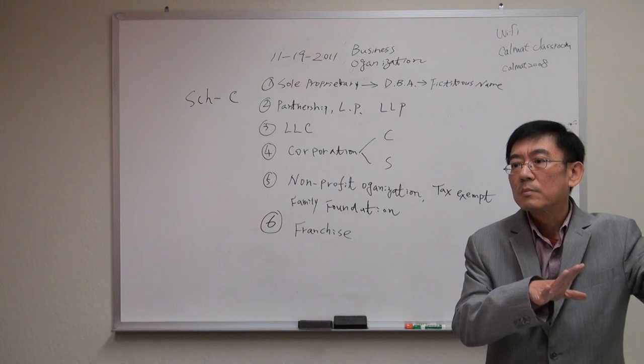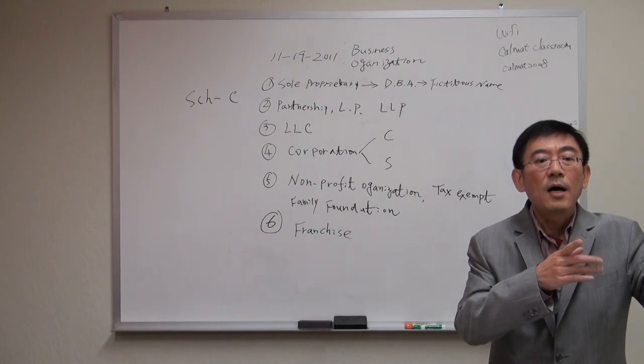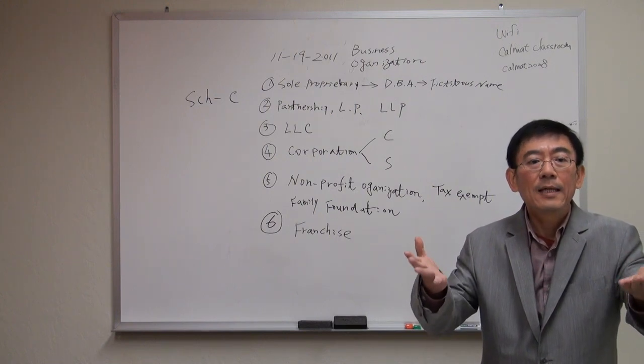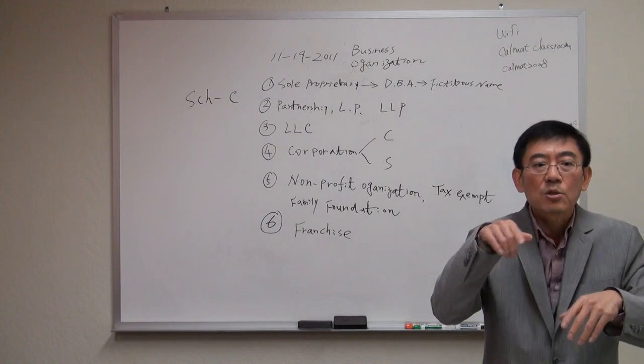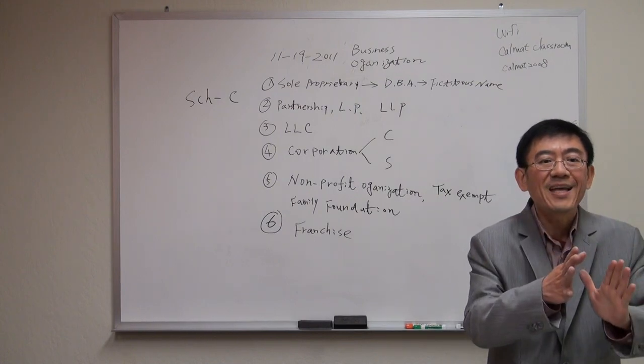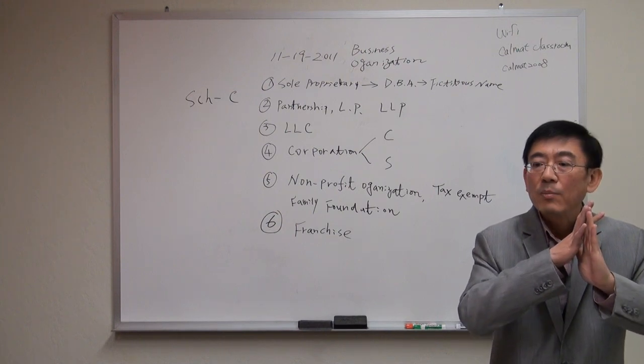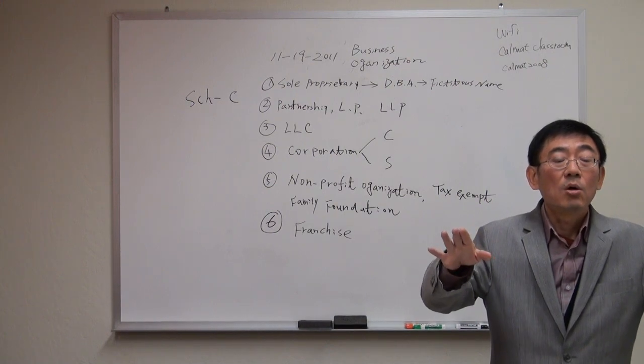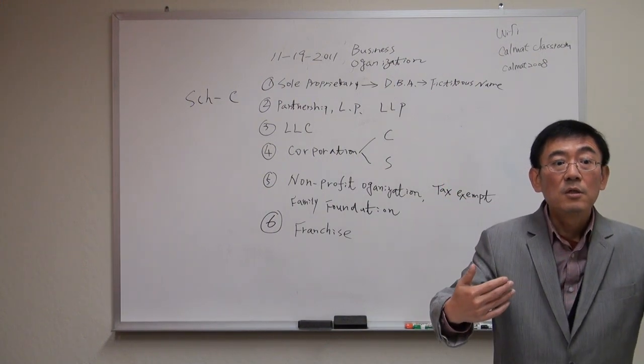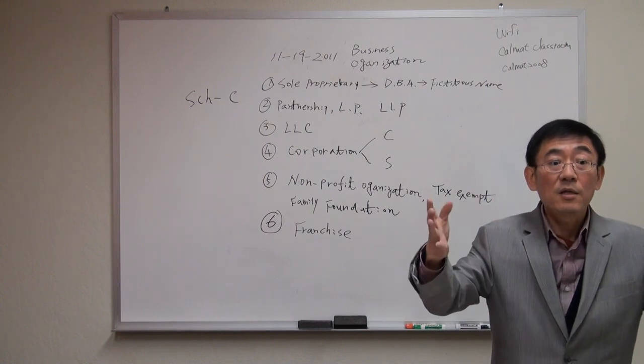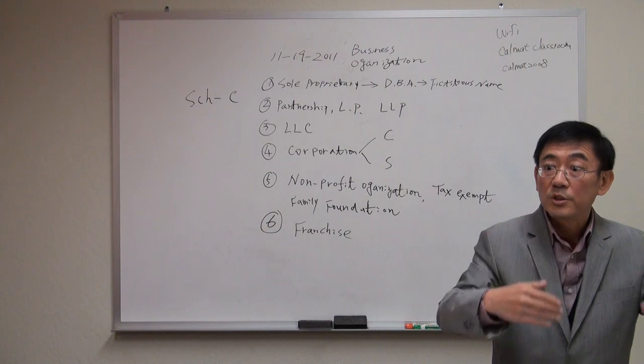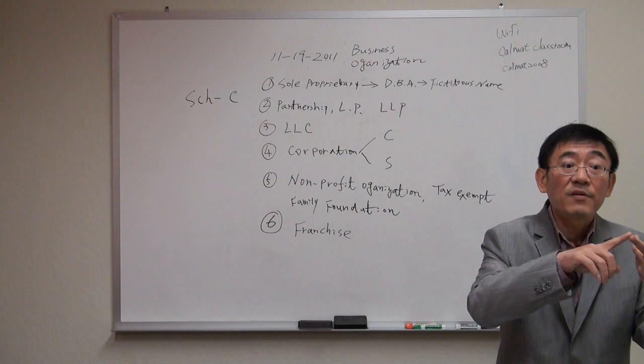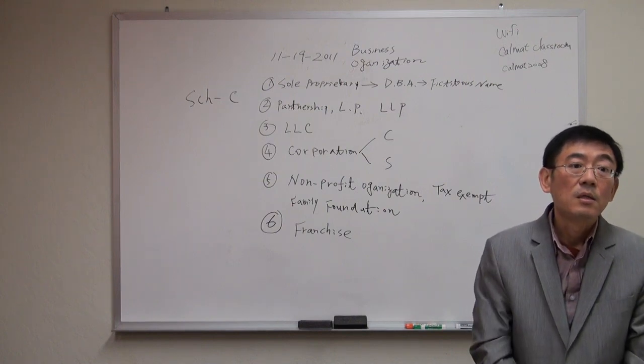Then you maintain C corporation. Otherwise, you elect, you just notify IRS and say I want to elect this company as S corporation. So you file 1120-S. However, S corporation does not pay any tax. It's just like a partnership. All of the income or loss falls through. We have K-1, send the K-1, fall through to shareholder, and the shareholder reports a number, either positive or negative, on their Schedule E.